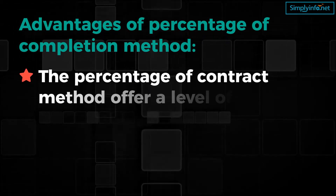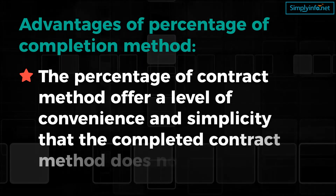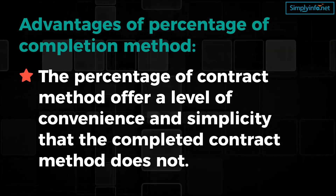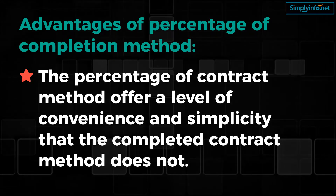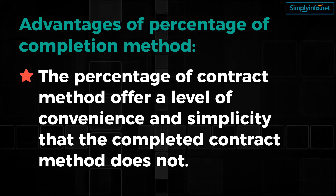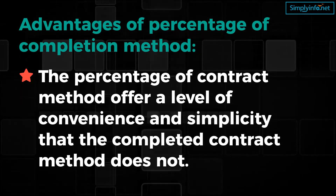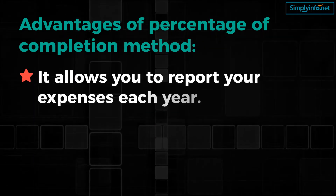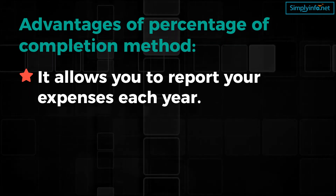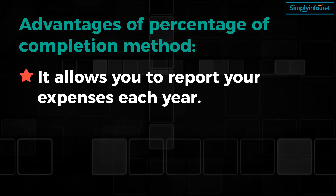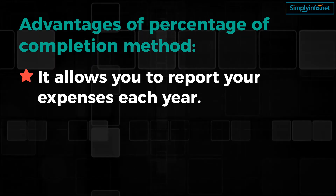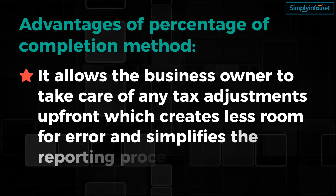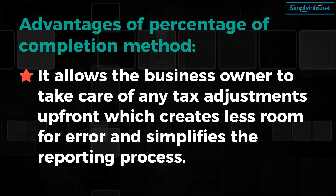The Percentage of Completion Method offers a level of convenience and simplicity that the completed contract method does not. It requires you to address taxes each year. Even though this is not convenient in terms of frequency, it can simplify the tax reporting process as you report a portion of your earnings and costs each year. It allows you to report expenses annually, which helps lower overall taxable income as qualifying expenses can be written off. It also allows the business owner to handle tax adjustments upfront, creating less room for error and simplifying the reporting process.